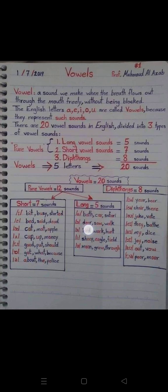Eight diphthongs recap: hound, ear, beer, chair, there, joke, oat, day, birth, my, dies, joy, noise, out, wow, poor, moor.